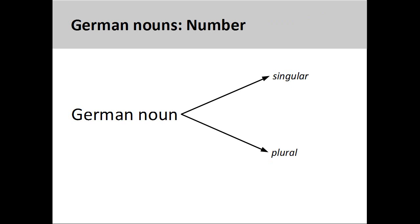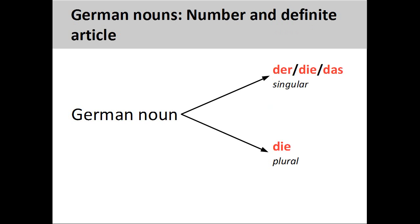German nouns can either be singular or plural. Unlike singular nouns, plural nouns manifest no gender. The only definite article for plural nouns is 'die.'